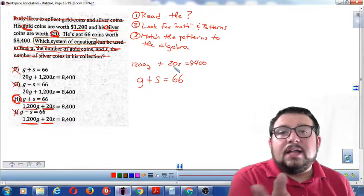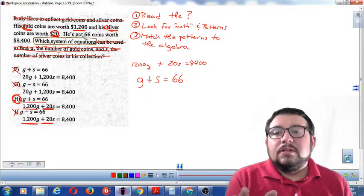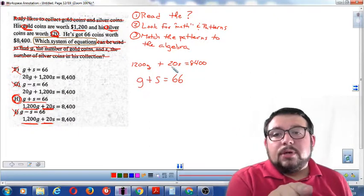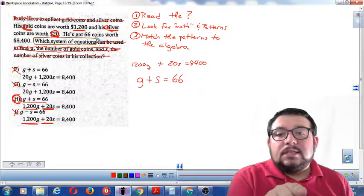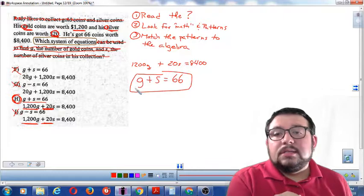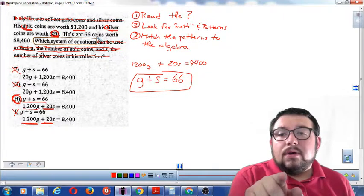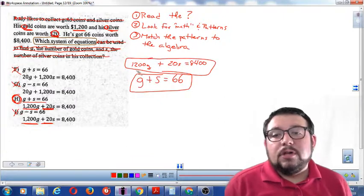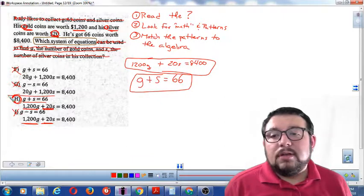Again, I'm not doing any math right now. I'm literally reading the words in the problem and just changing those words to algebra. The pattern I see is he's got 66 coins. So this is a pattern. I add up them, I add them up and I get 66. And they're worth $8,400. I add up the values and I should get $8,400. And where do I see that? I see that right here in choice H.